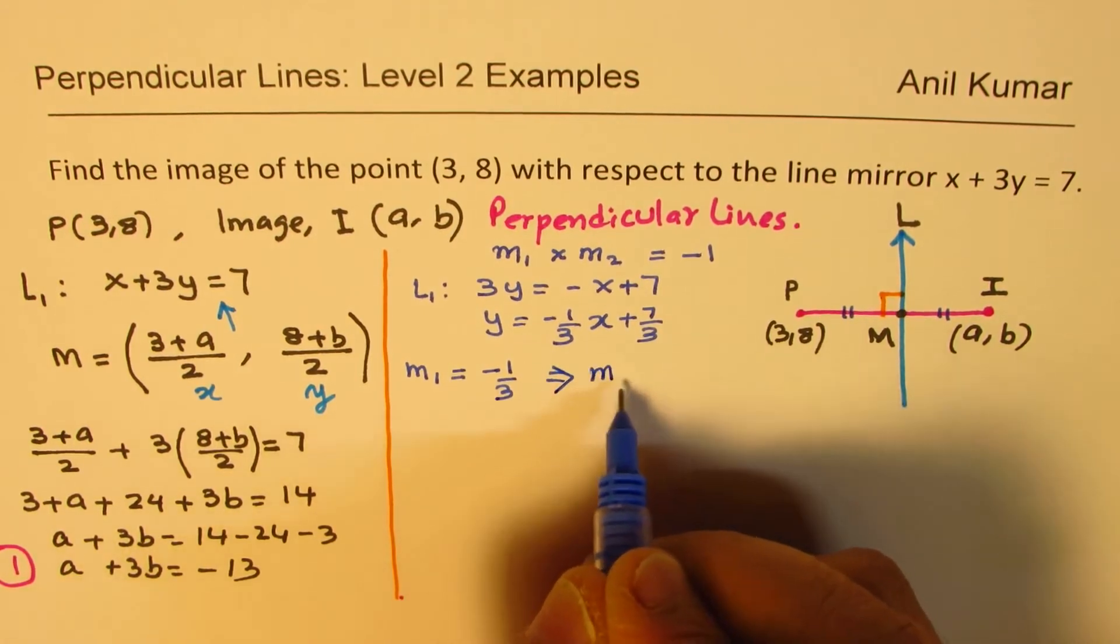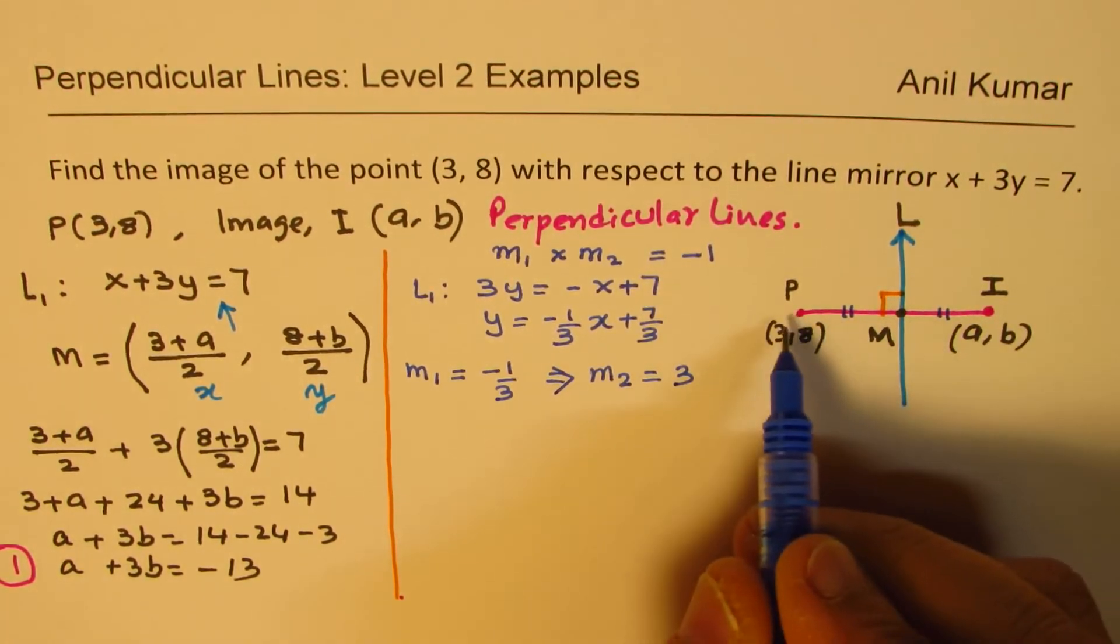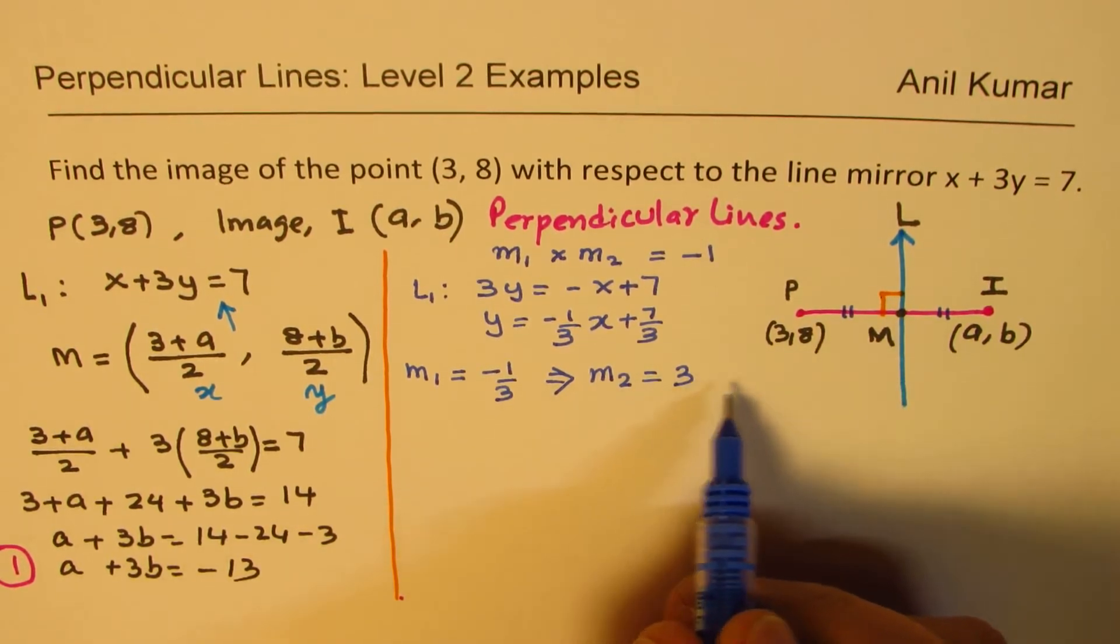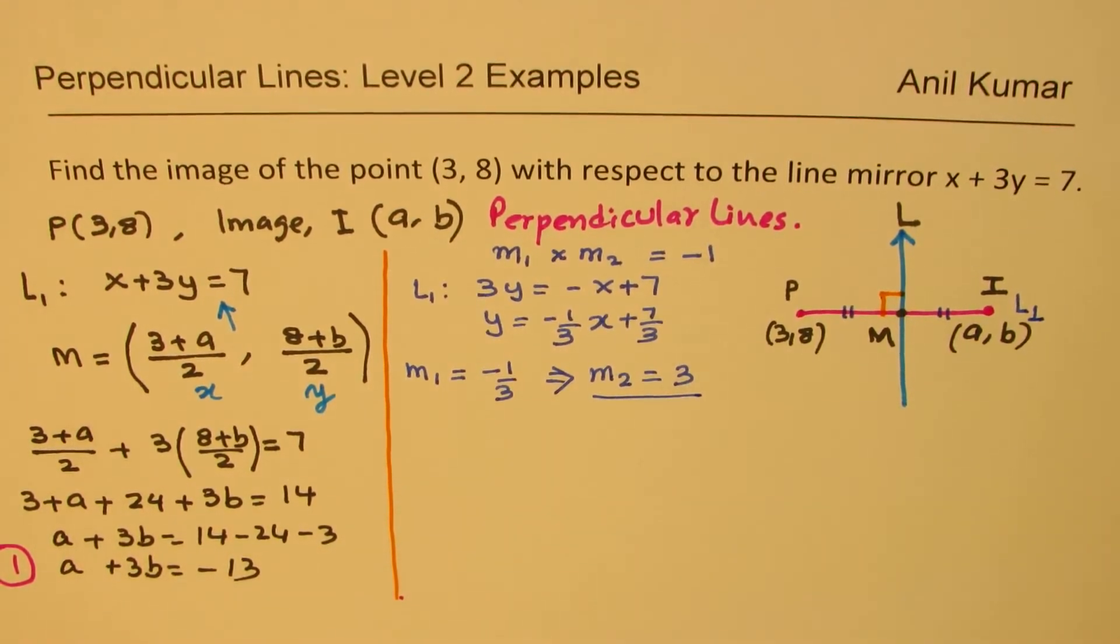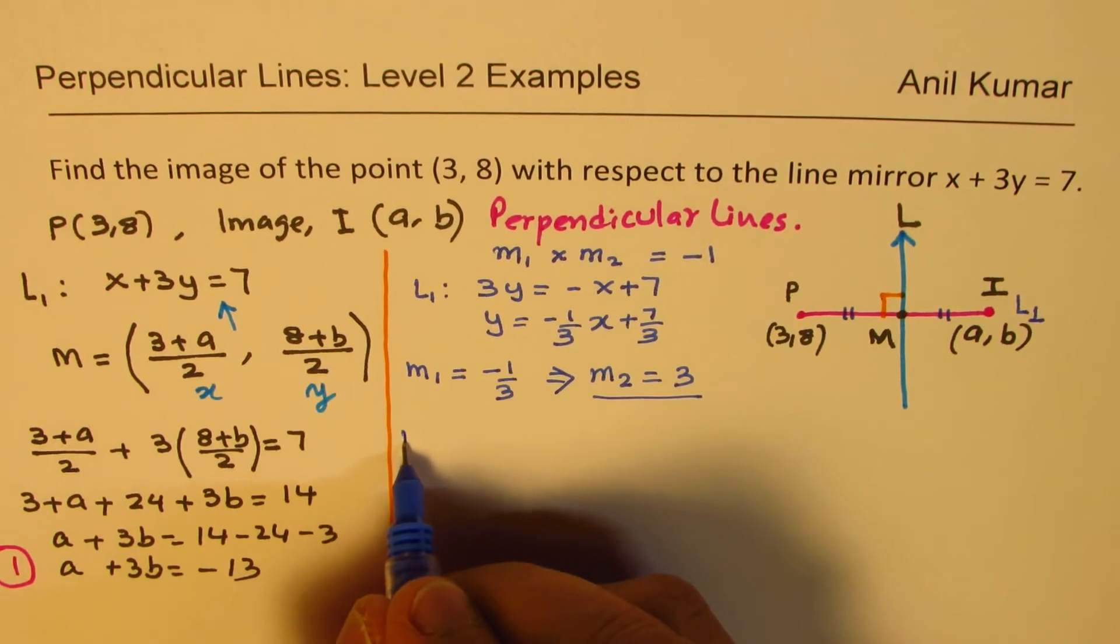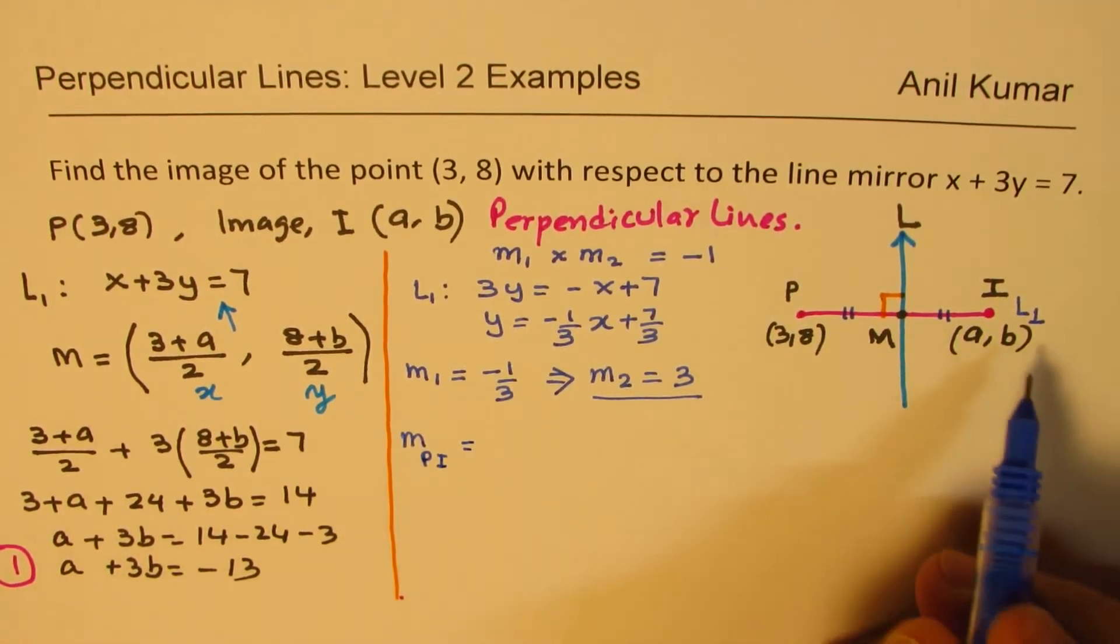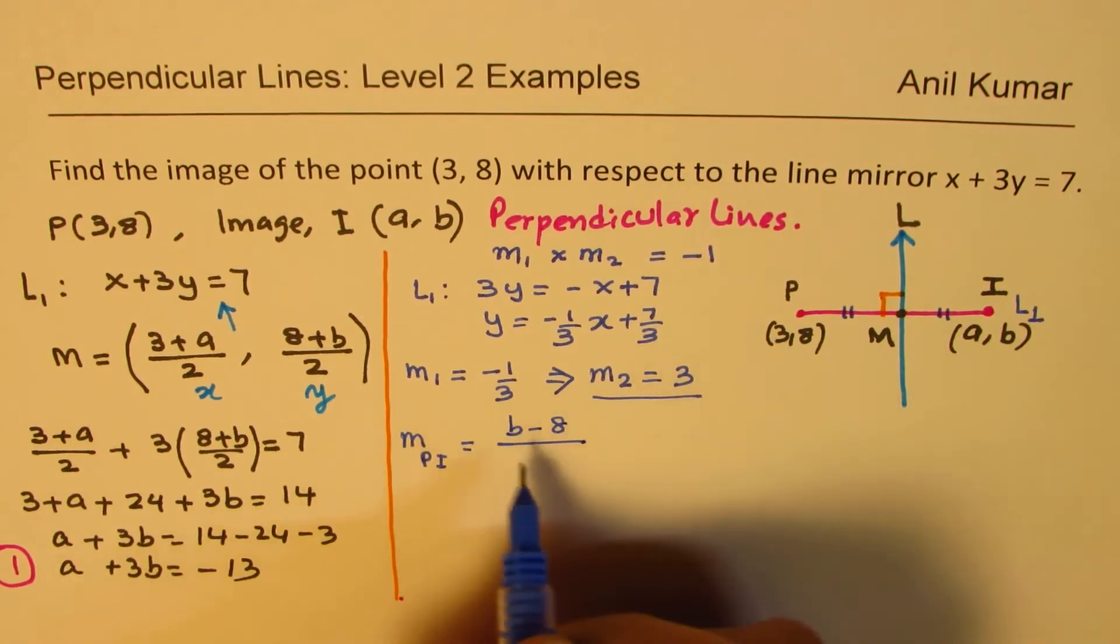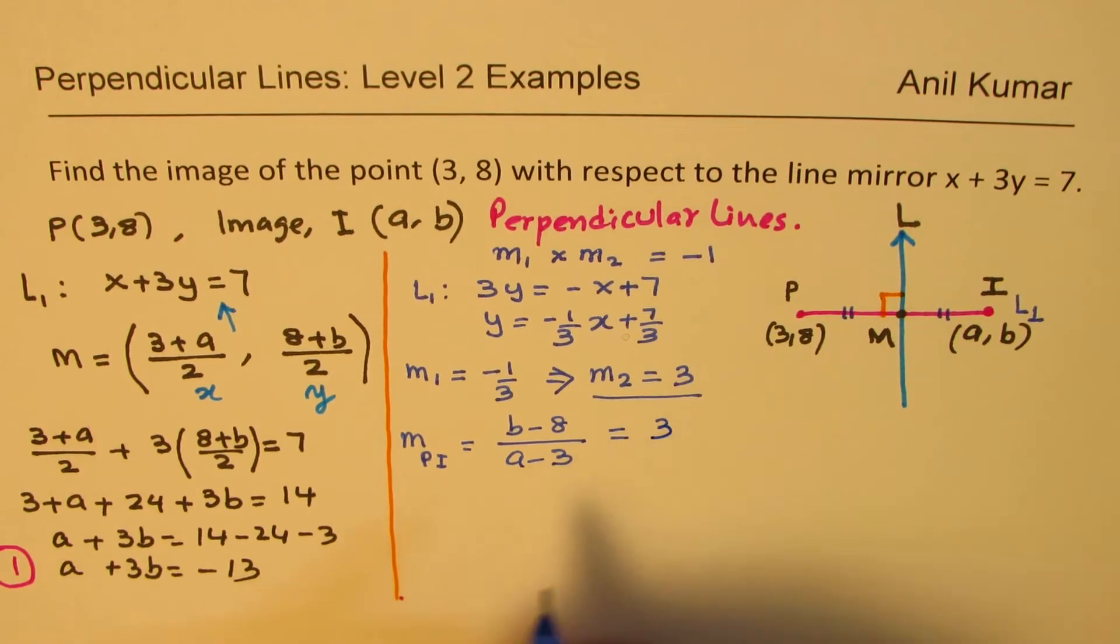So that tells you that the slope m2 is basically negative reciprocal, that means it is 3. So the slope of line PI has a slope of 3. This perpendicular line has a slope of 3. But if you consider these two points, then the slope m from P to I is basically equal to (b - 8)/(a - 3). And that slope has to be 3. So this relates a and b, and we should get the second equation.